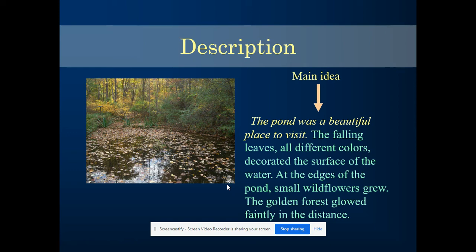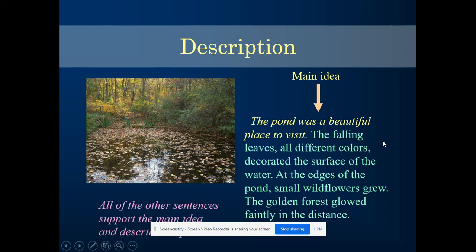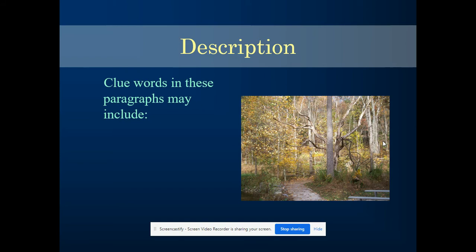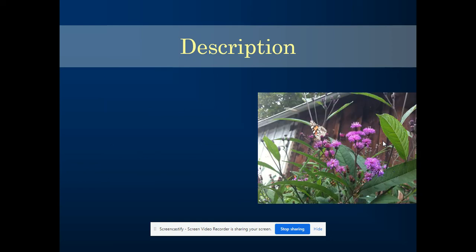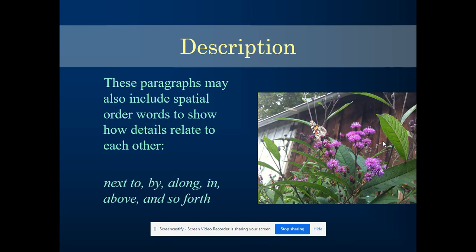So description is a little different. We really have to read carefully and consider what is this text telling us — we can't just peek for clue words. However, there are some clue words that description may use, such as one reason, another reason, and for example. Those are used a lot when describing ideas. But when describing a place or a thing, you might use spatial words such as next to, by, along, in, above, and so forth, because those give you a clue and help you paint that mental image. Description texts are really tricky because you have to read them carefully and ask yourself: what is this telling me, and is it describing something?